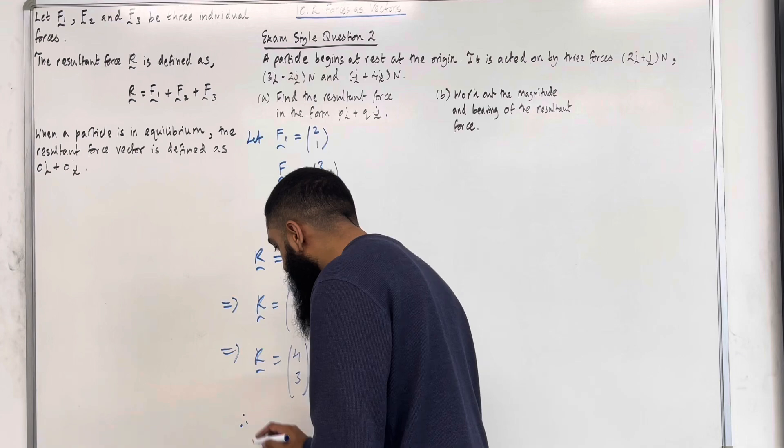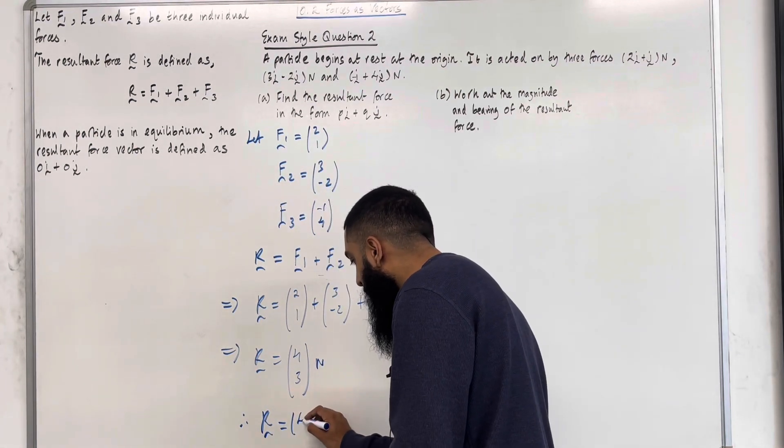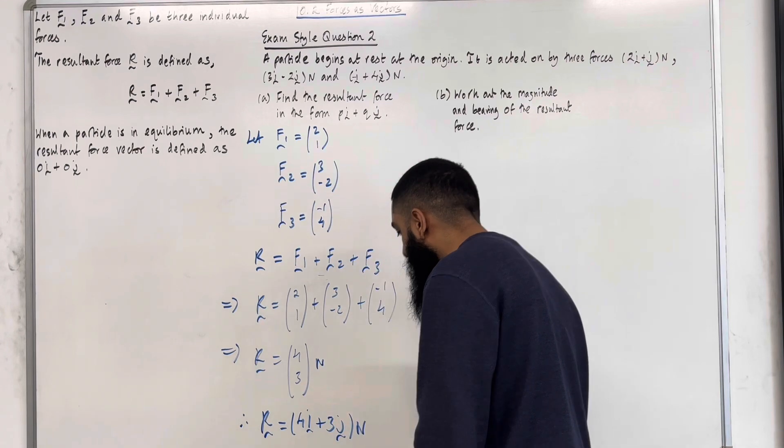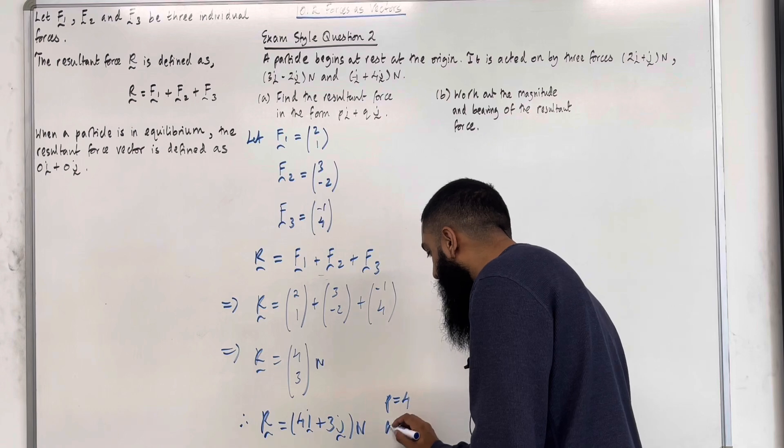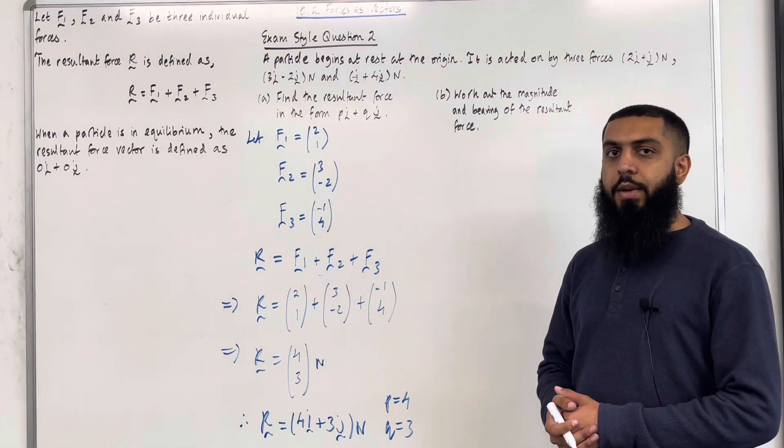Therefore, in IJ notation, the resultant force R is equal to 4I plus 3J Newtons, where P is equal to 4 and Q is equal to 3. This completes part A of exam style question 2.